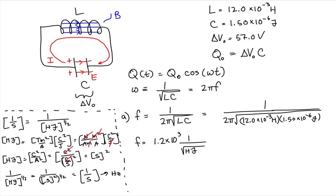We have confirmed that our units work out to reciprocal seconds, or hertz. Therefore, the frequency of oscillations for this LC circuit is equal to 1,190 Hz to three significant figures.